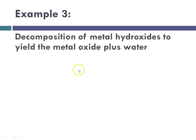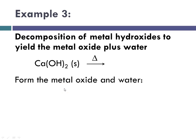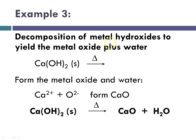Example three: the decomposition of metal hydroxides to yield the metal oxide plus water. Here, calcium hydroxide is going to decompose with help from heat, and we're going to form the metal oxide and water. Calcium is a +2 metal (group 2), and oxygen is going to be -2. So when we combine them, the binary ionic compound would be CaO — +2 and -2 cancel out. So, the decomposition of calcium hydroxide with heat will produce calcium oxide and water.